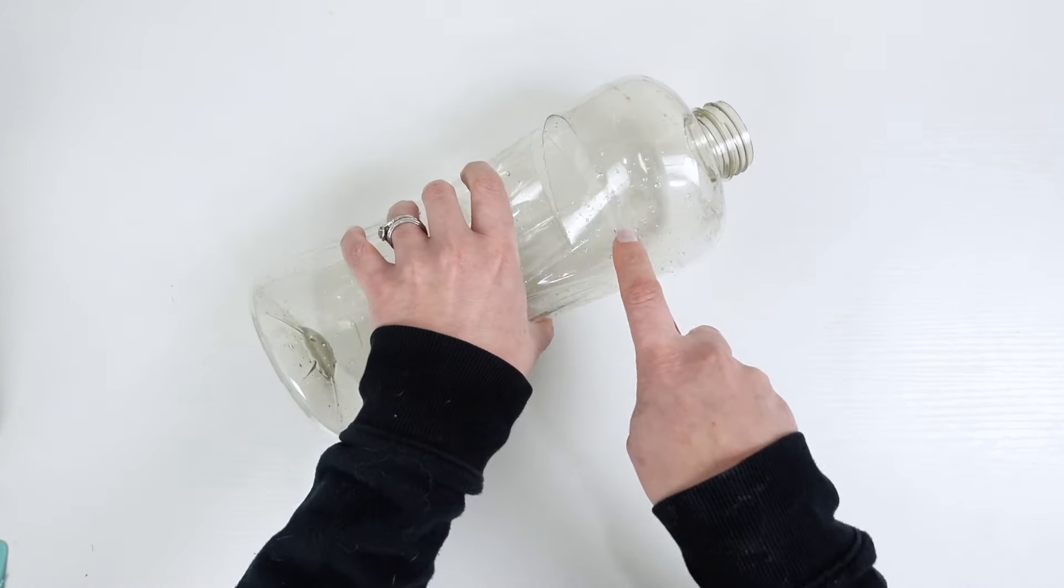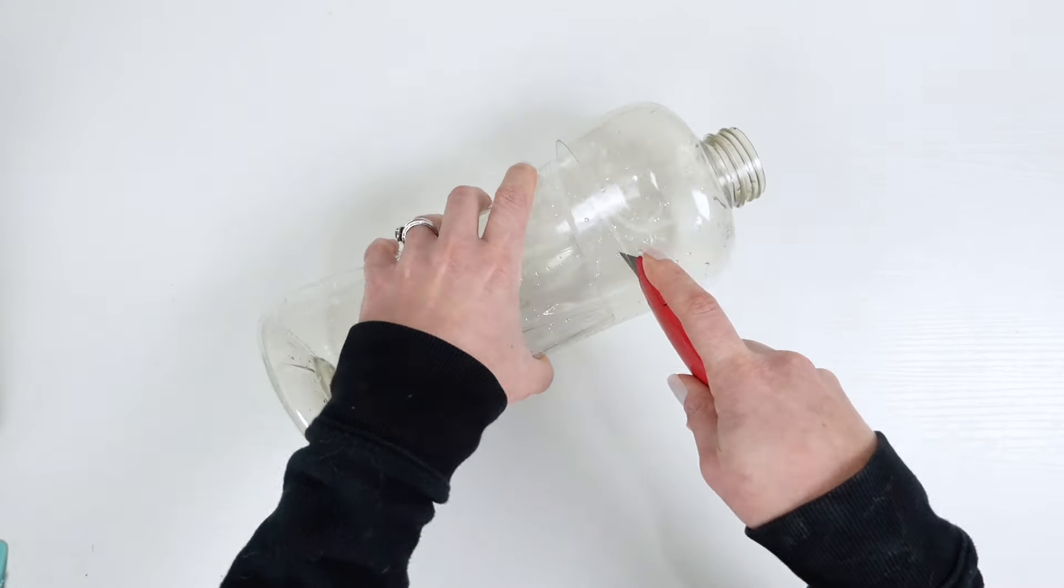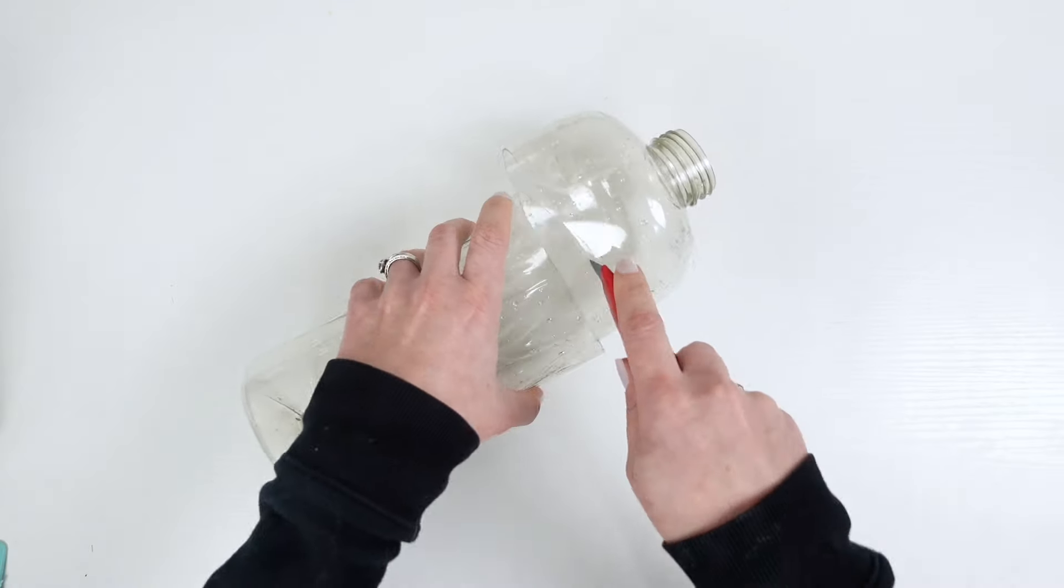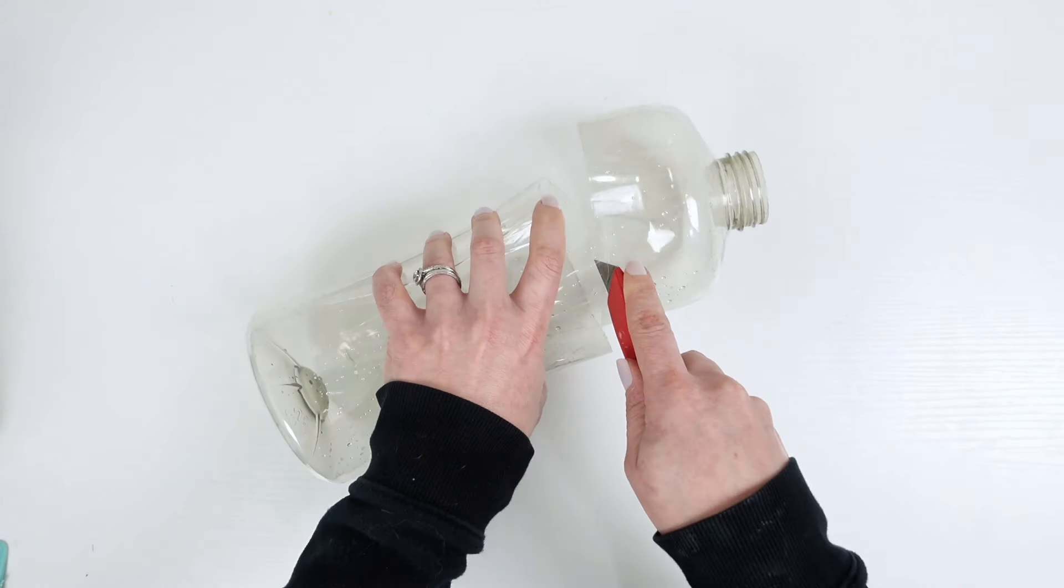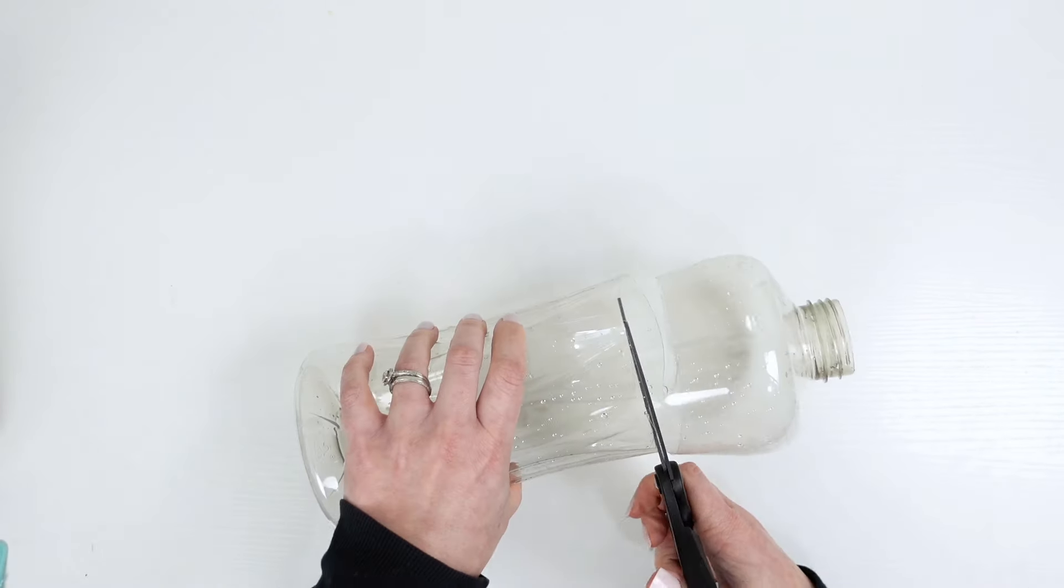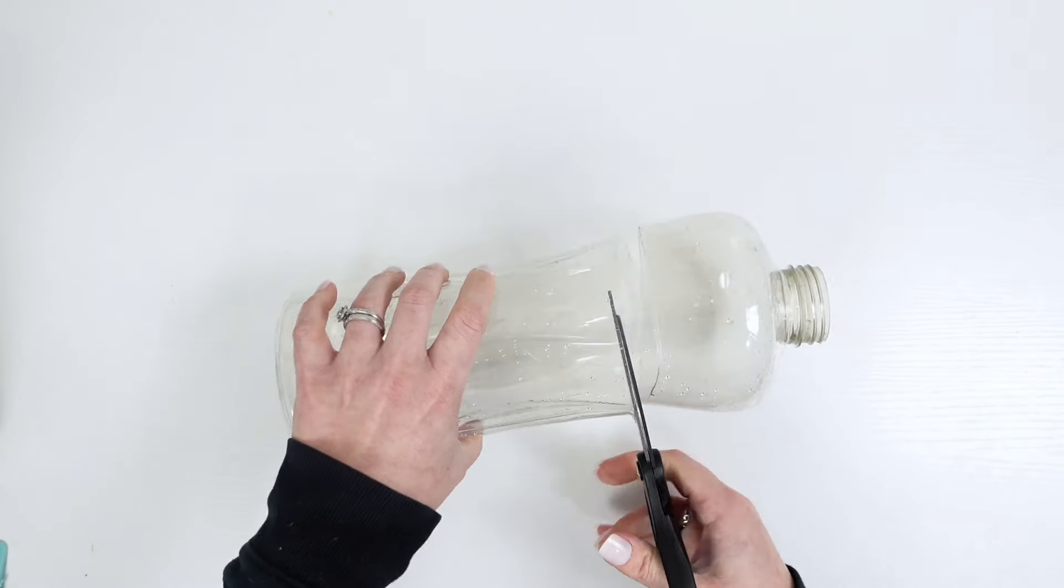I used an X-Acto knife and I probably should have been wearing some sort of glove to keep my fingers away. So be 100% careful while you're cutting. You can also go in with a pair of scissors after you make a small slice. It just might be a little bit wonky.